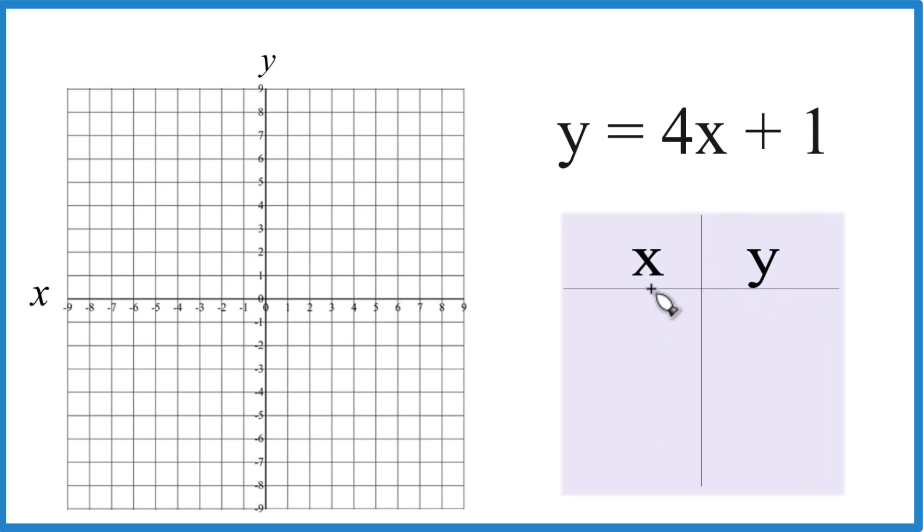So you can use any value. I like to start with 0 because 4 times 0 is 0. 0 plus 1, that's just 1. Pretty easy. How about we choose 1? 4 times 1 is 4, 4 plus 1 is 5.